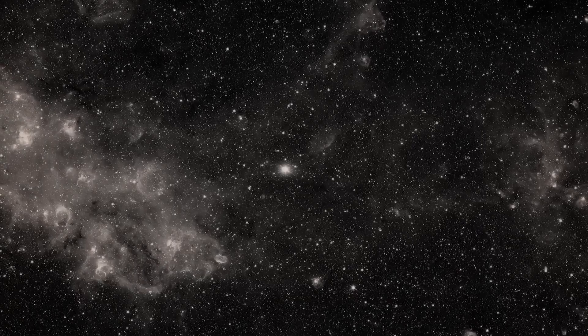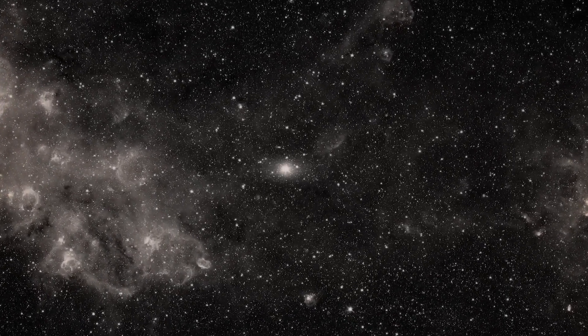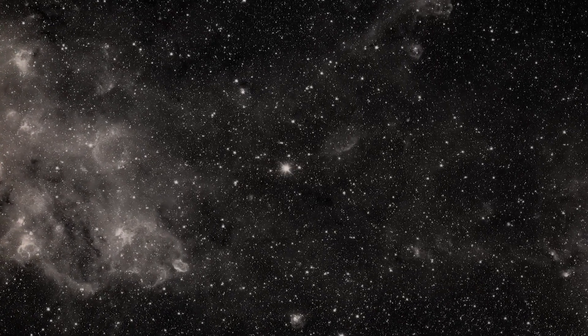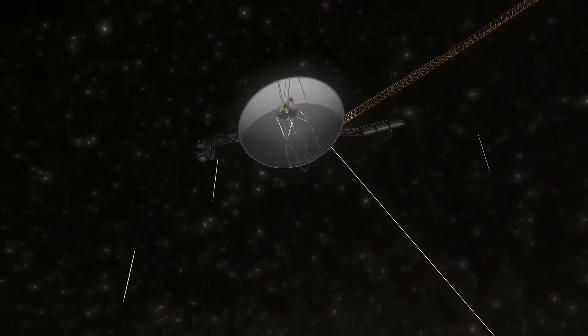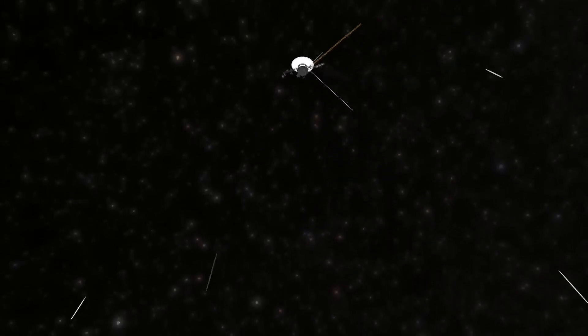Strangest of all, however, is that despite the peculiar nature of the data, Voyager 1 appeared to be functioning smoothly. Its communication link with Earth remained intact and the signal remained strong, allowing valuable information to reach NASA without much trouble.